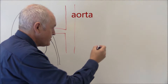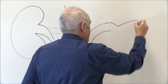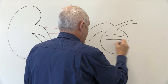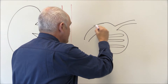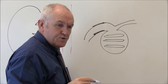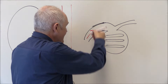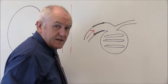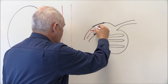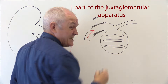There is an afferent arteriole taking blood into the glomerulus, and here we have the glomerulus, which is the ball of capillaries. Now in the walls of the afferent arteriole there are specialised smooth muscle cells, and if the pressure of the blood is reduced, that's detected in the walls of the afferent arteriole. Those specialised smooth muscle cells will respond by releasing an enzyme called renin.